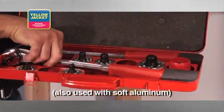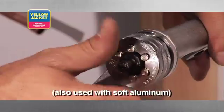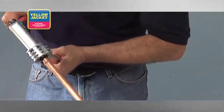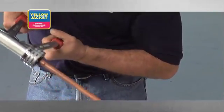First, outfit the tool with the proper size expander head for your tubing. Next, insert the tubing over the expander bit. Slowly actuate the handles and carefully release the tubing.